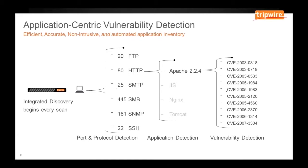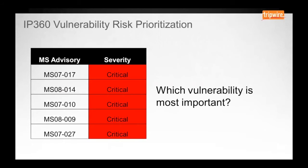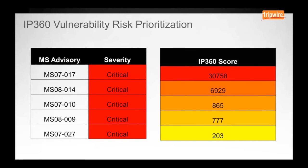Another unique attribute of Tripwire IP360 is advanced vulnerability risk scoring and prioritization. Traditional metrics for vulnerability risk are insufficient to triage the tens of thousands of vulnerabilities that might exist in an environment. In this example, there are five vulnerabilities, each with a critical rating. You might assume they're roughly comparable in terms of risk, but they're actually quite different. The Tripwire IP360 risk score assigns a numerical score to each vulnerability so that scores at the top of the list are indicative of very dangerous vulnerabilities that need urgent remediation.